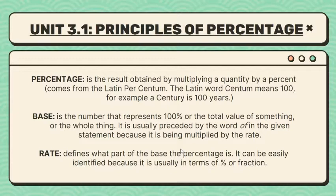For example, a century is 100 years. Base is the number that represents 100% or the total value of something — the whole thing. It is usually preceded by the word 'of.' Rate defines what part of the base the percentage is. It can be easily identified because it is usually in terms of percent or fraction.